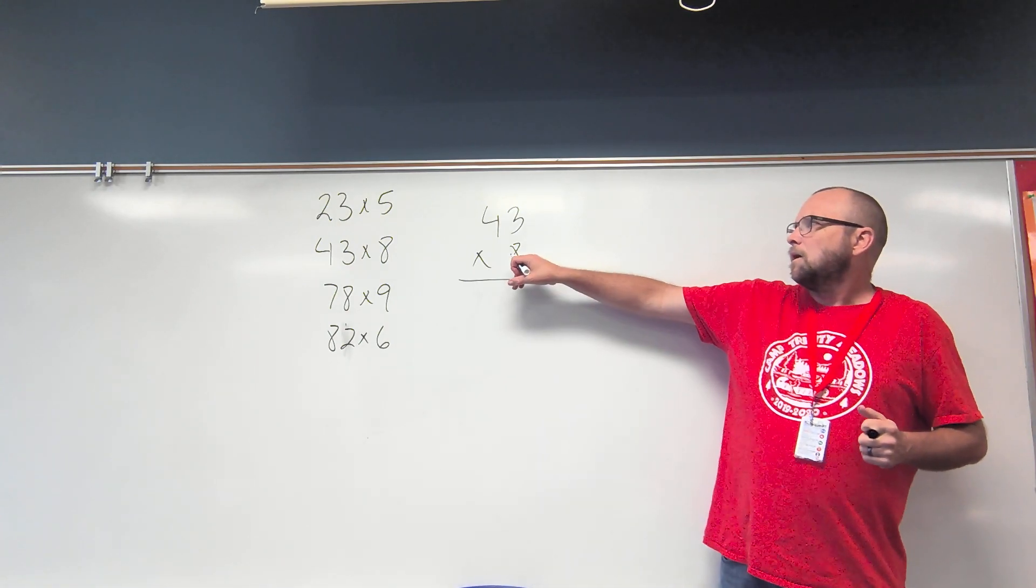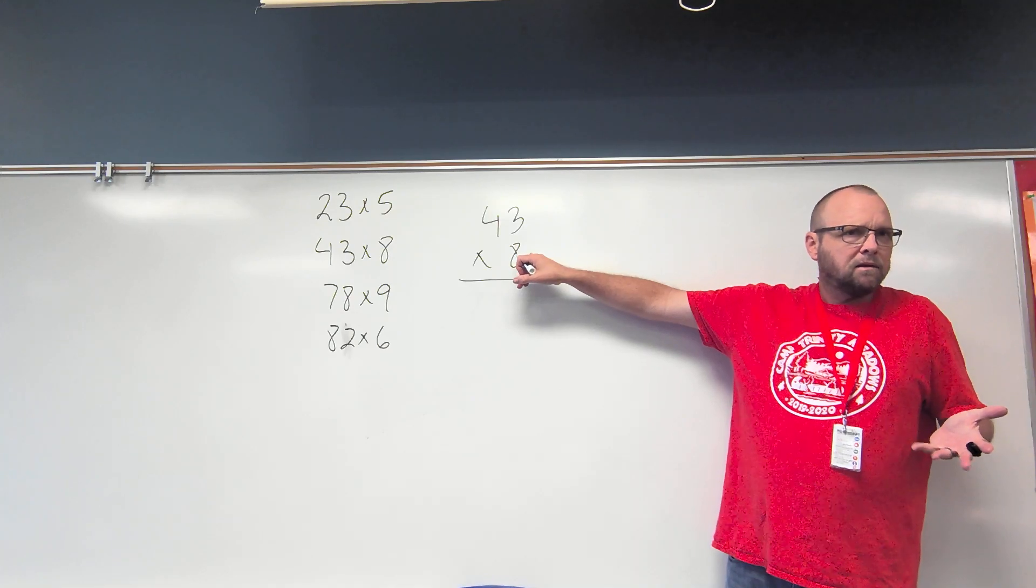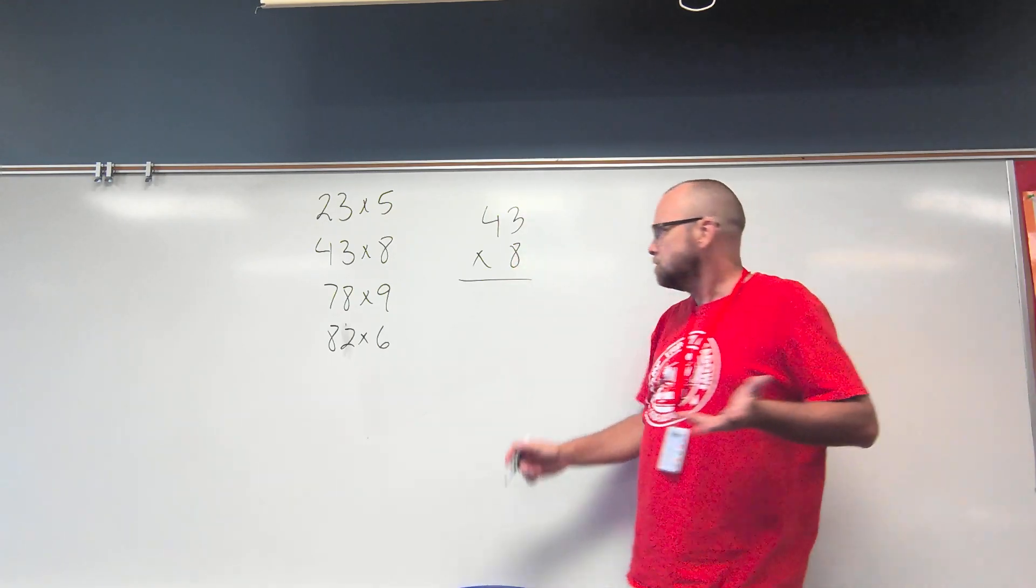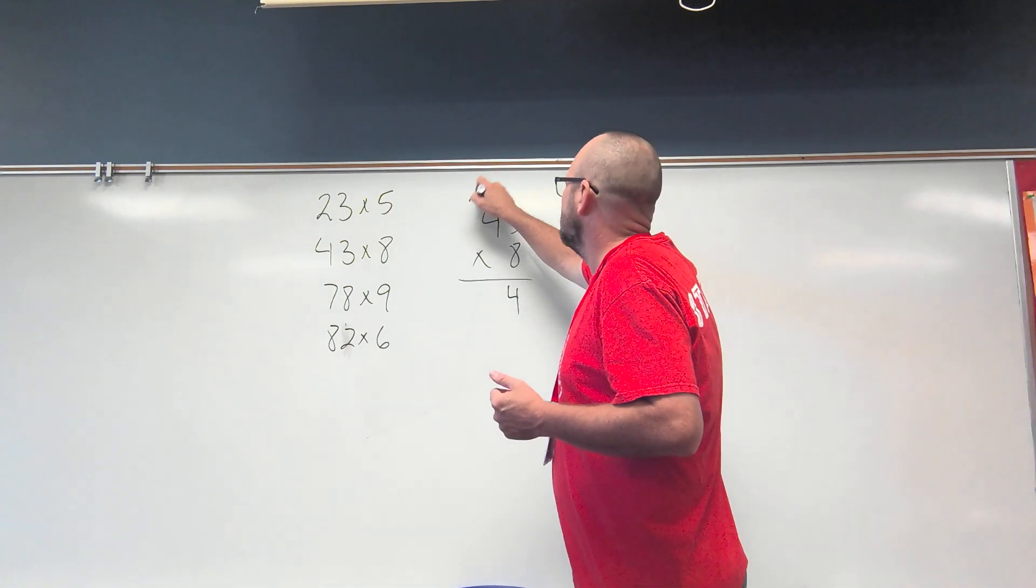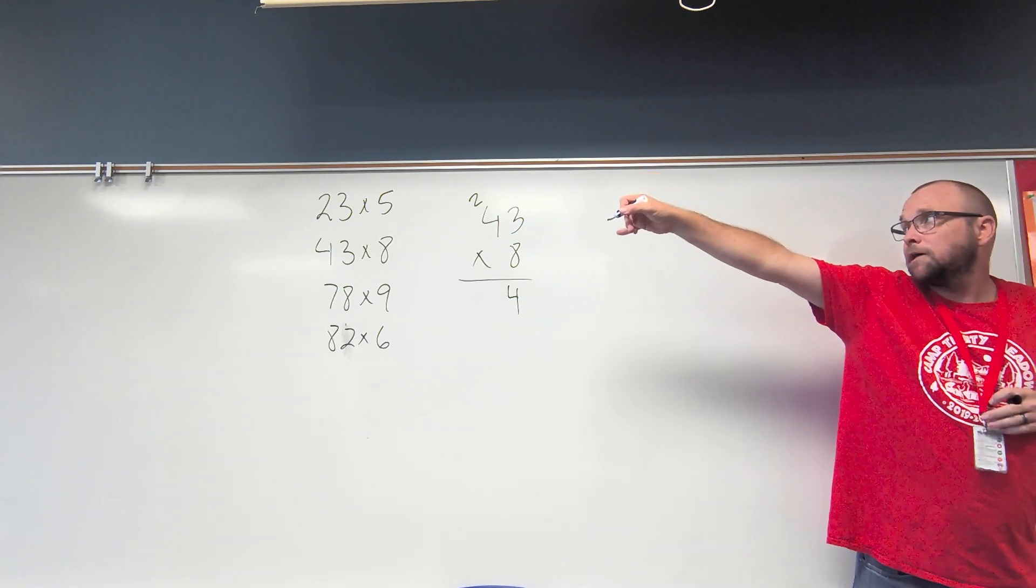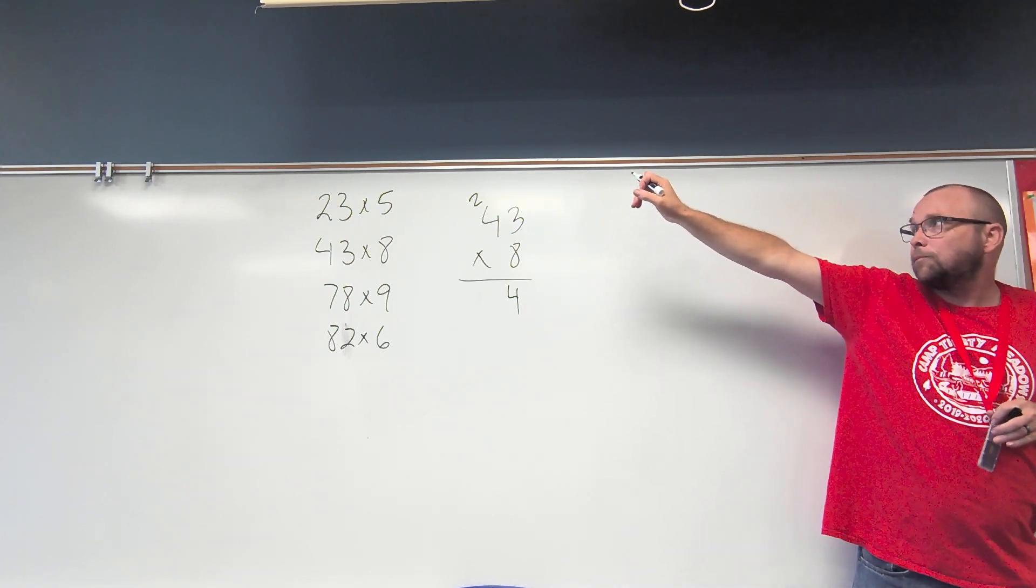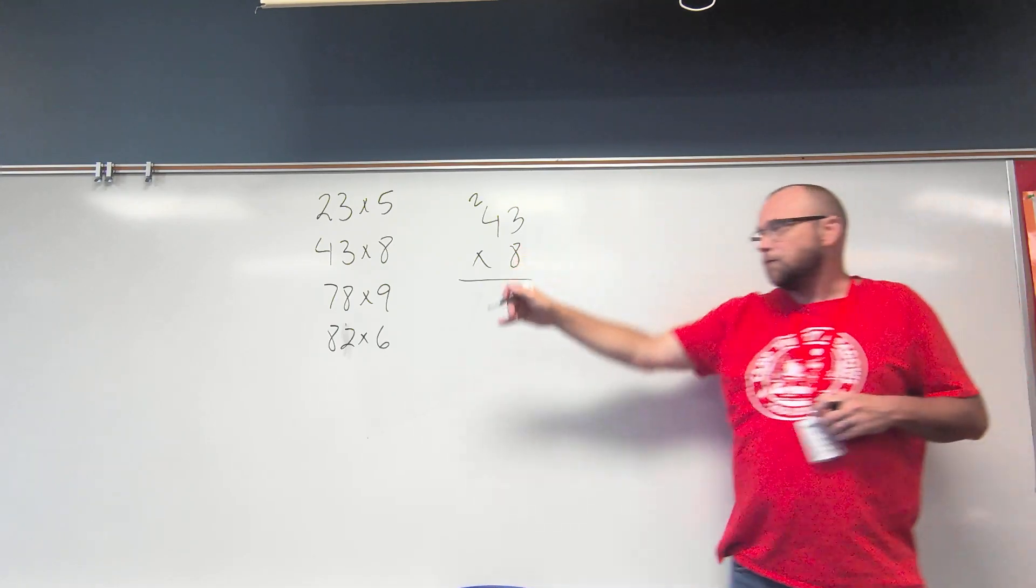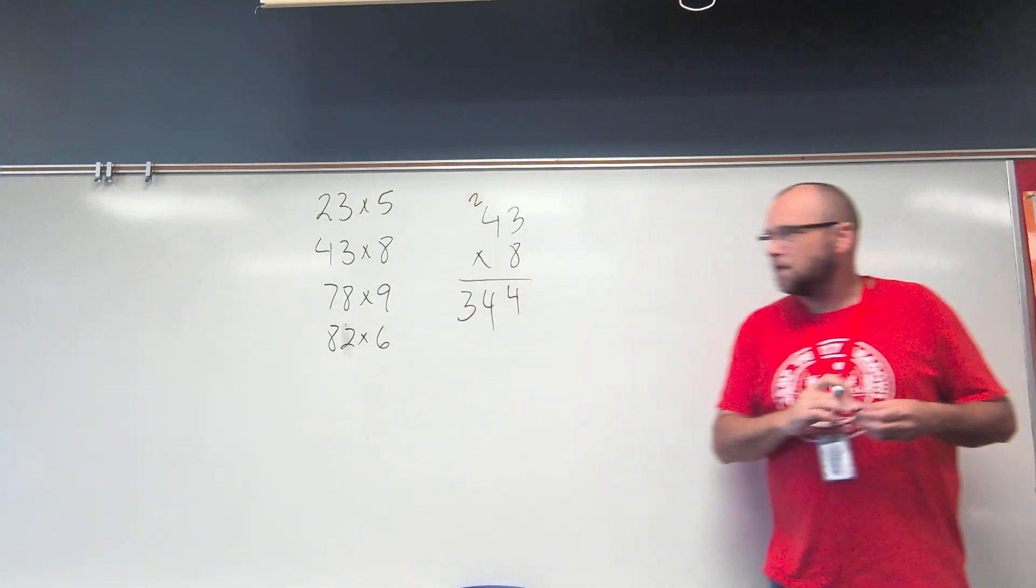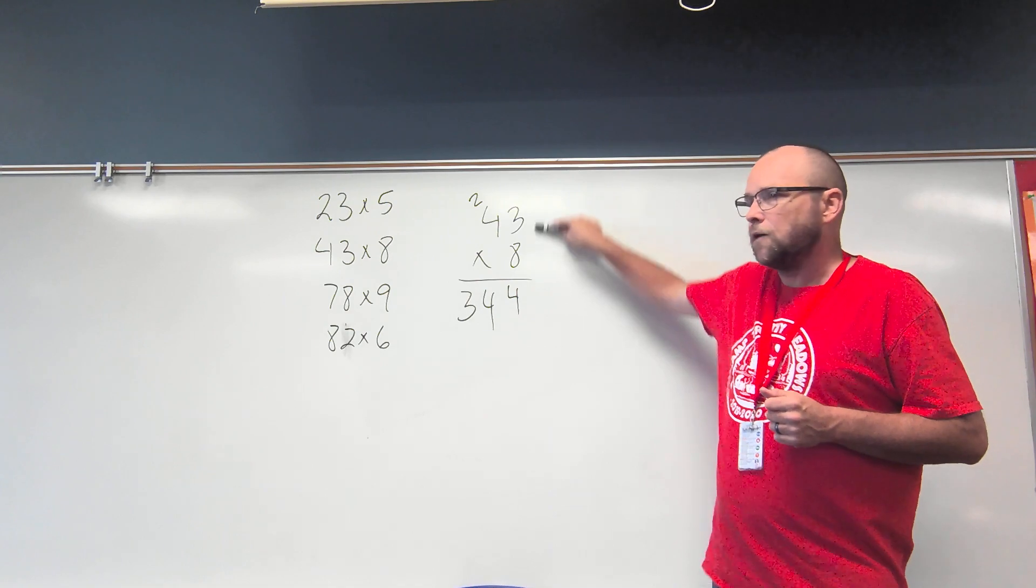So we go with, and again, multiplication chart, use your fingers, whatever you need, because those are all tools. 8 times 3 is? 24. So I have 24 ones, or two tens and four ones. 8 times 4 is? 32. Plus two more? 34. So 43 times 8 is 344. That's the product of these two factors.